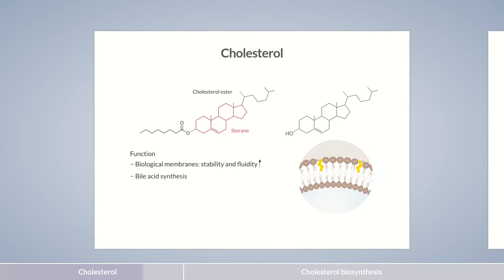Moreover, cholesterol is the starting substance for bile acid synthesis, as you may have guessed from its name. It originates from the Greek words kola, meaning bile, and stear, meaning fat. So bile acids are therefore also steroids. In addition, cholesterol serves as the precursor for the synthesis of steroid hormones, such as glucocorticoids and several sex hormones. For this, it's converted initially into pregnenolone in the adrenal gland, and all other corticosteroids are then formed from pregnenolone. Also, the synthesis of vitamin D produced in the body occurs through cholesterol.